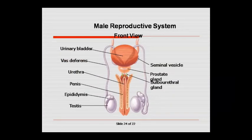The male reproductive system can be seen in front view. Here the urinary bladder is shown, along with the testes.